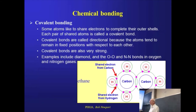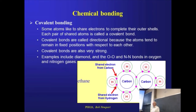Covalent bonding is slightly different. We are still heading towards reducing the overall energy of our atoms by producing something that approximates to a filled shell of electrons — hitting the maximum number of electrons we can put in that shell. But in a covalent bond, we're doing that by sharing electrons rather than by the donation of an electron wholesale, which is what we had in sodium chloride.